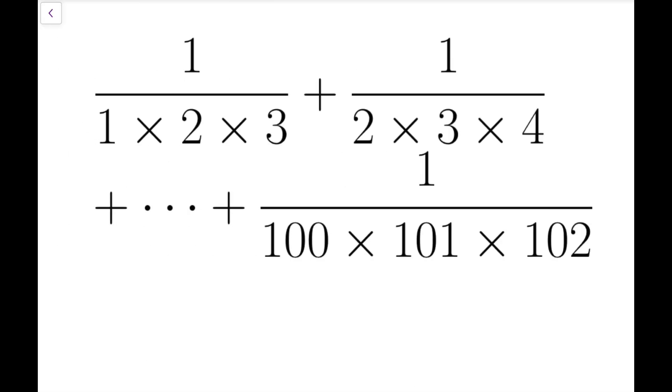So first of all, let's take a look at the patterns of these fractions. You can see that all the numbers at the denominator are products of consecutive positive integers, and there are three of them in each fraction.